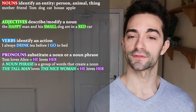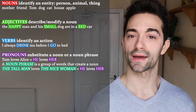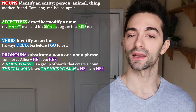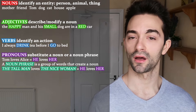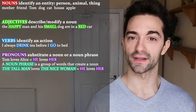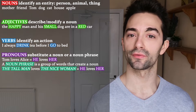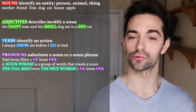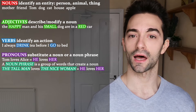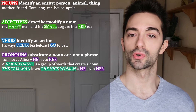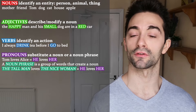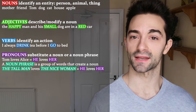For example, I can say Tom loves Alice, where Tom and Alice are nouns. But I can also say he loves her, where he and her are pronouns. A noun phrase is a group of words that create a noun. So if I say the tall man loves the nice woman, the tall man is a noun phrase which consists of an article, an adjective and a noun.